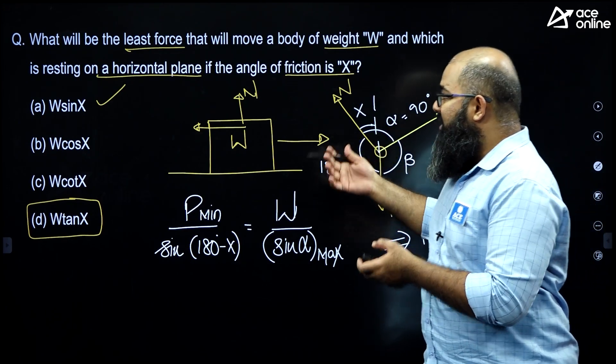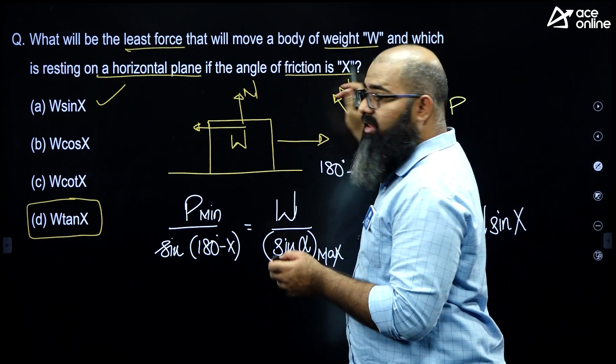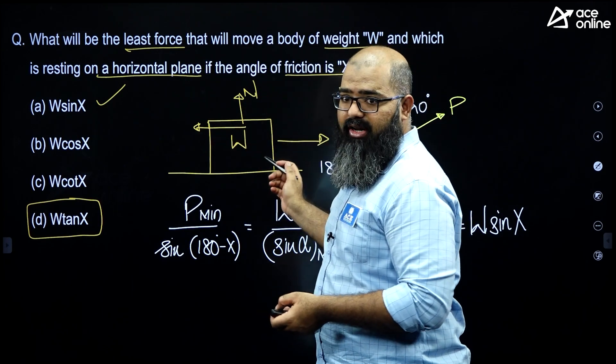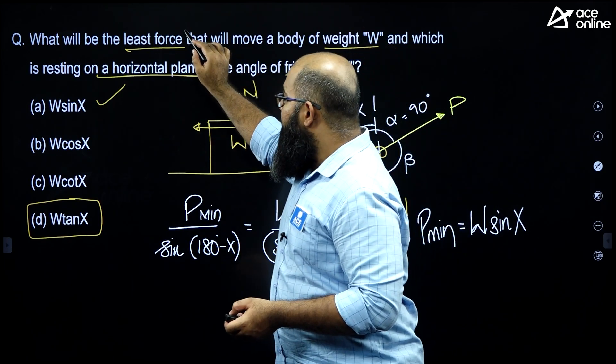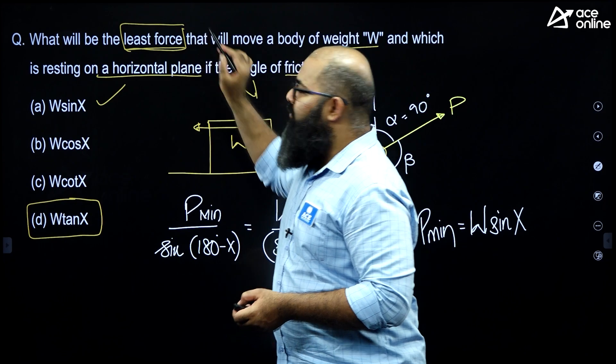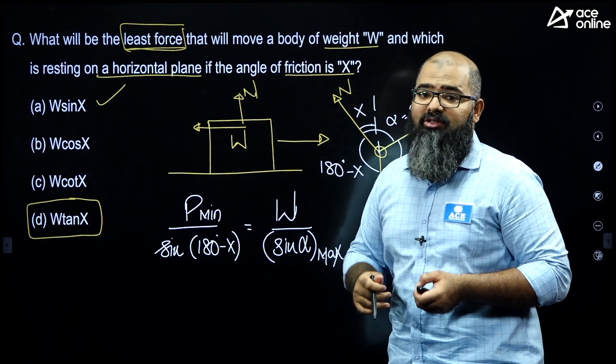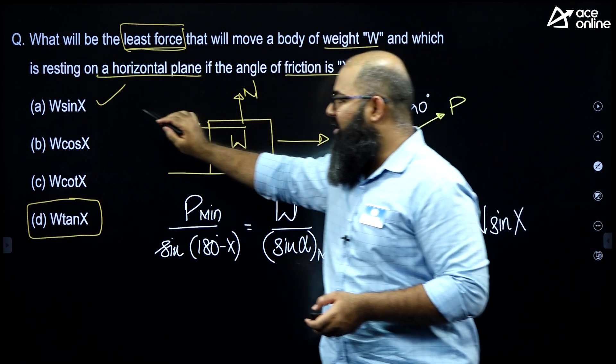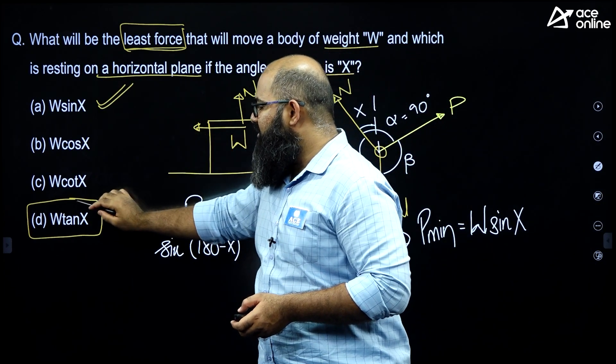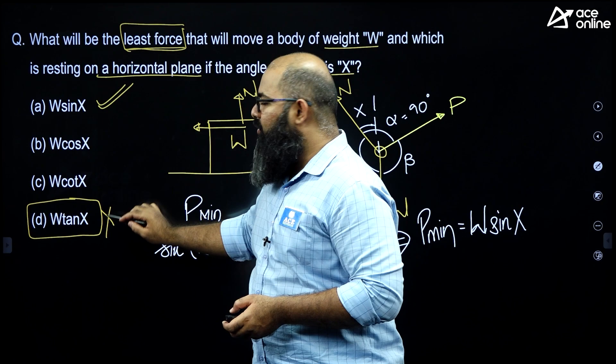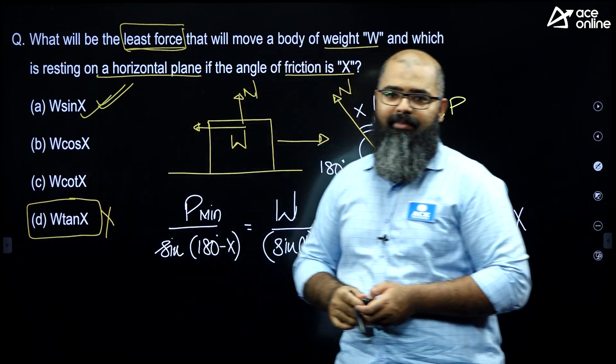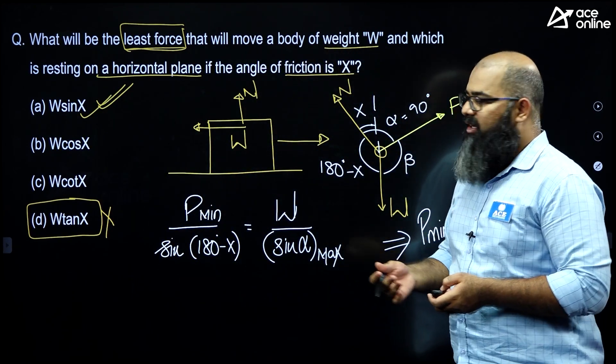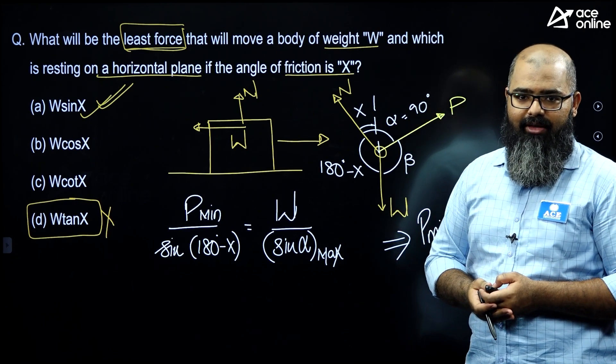Now, that is what can be challenged because nowhere in this question, the force is being considered in the horizontal direction. The only condition for the force is it has to be least force. So, it is in our hands to decide the direction of force. So, going by that, we can say the correct answer is option A while TSPSC has given this as answer. Therefore, this can be challenged and we can claim this to be our correct answer. I hope the rest of the questions were clear to you and all the best to all of you. Thank you.